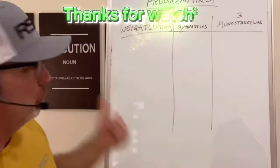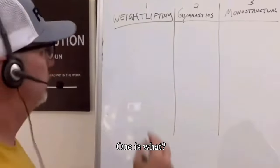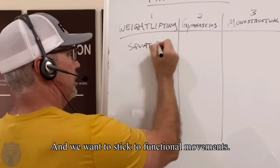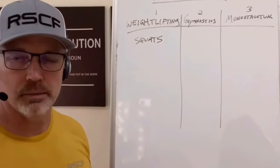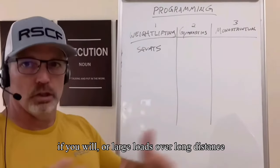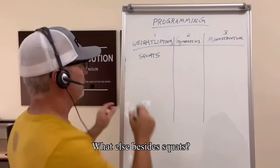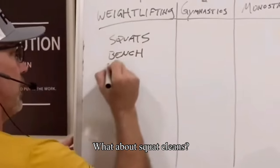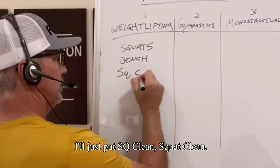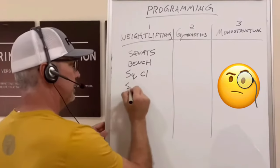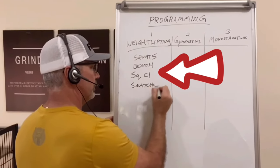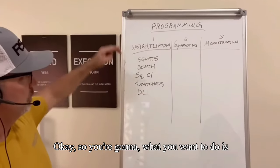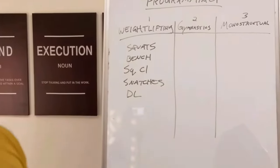The first thing we're going to look at is weightlifting. What is a weightlifting movement? One is squats. We want to stick to functional movements — a lot of work over a short period of time, or large loads over long distance in the shortest amount of time. What else besides squats? How about benching — bench press. What about squat cleans? What about snatches? What else is a weightlifting movement? Deadlift. So you want to put together your weightlifting movements.